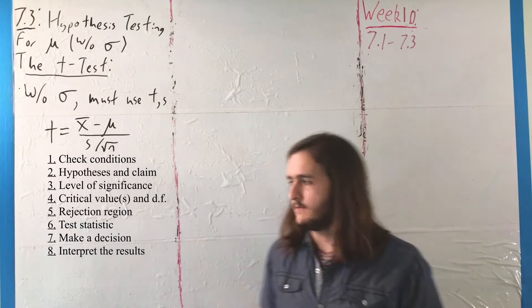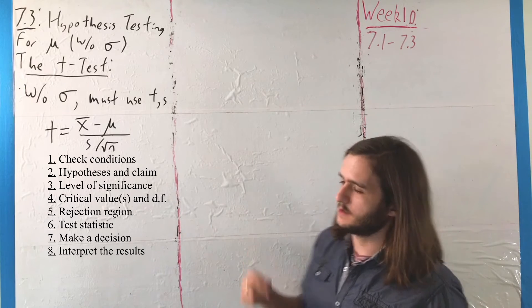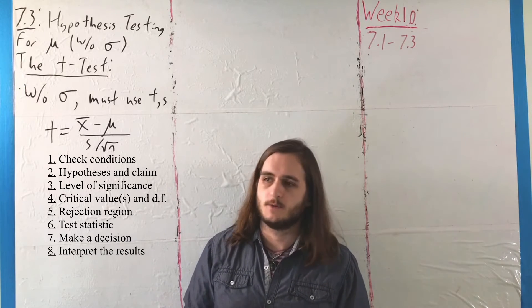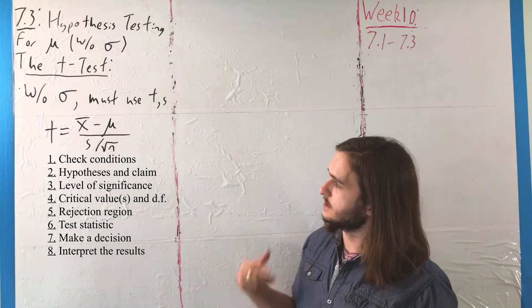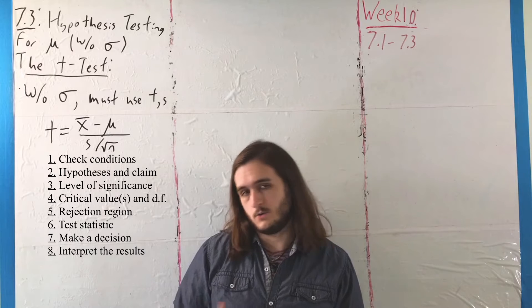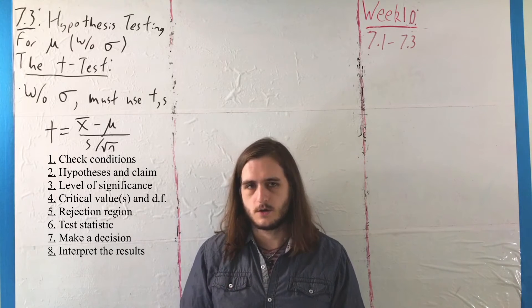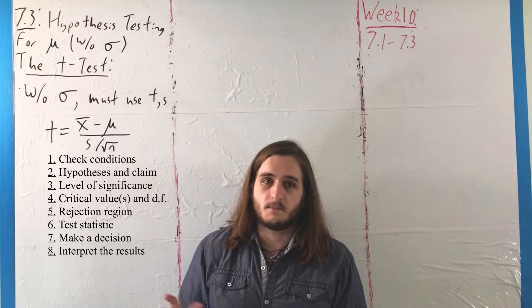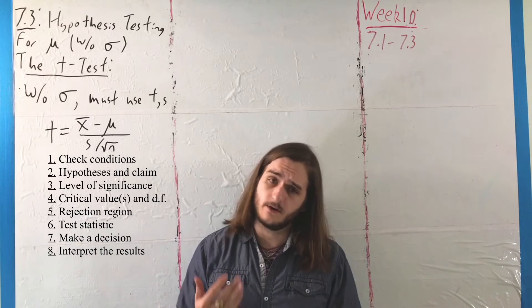So like I said, very similar steps to the z-test, but there's that little addendum there in terms of the fact that our test statistic is now using a t-value. And because we're using a t-value, we need to identify the degrees of freedom along the way. But as far as mathematical complexity, it's very similar.